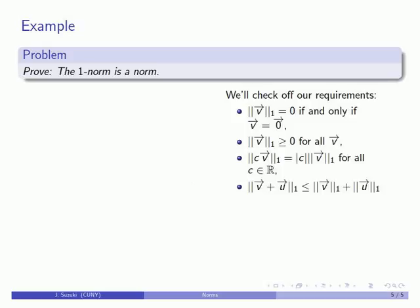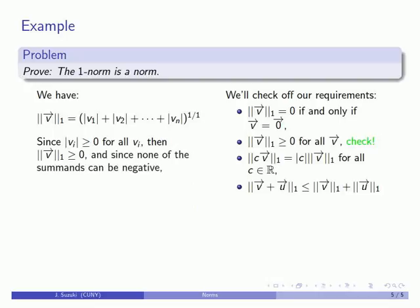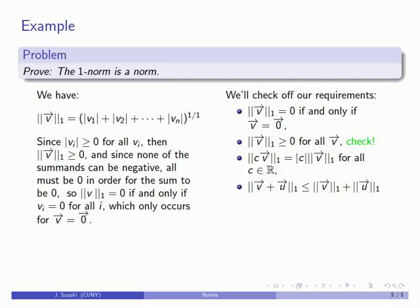First, we set down our definition of the 1-norm and make a few observations. The absolute value of each component vi must be greater than or equal to zero, which means the sum is greater than or equal to zero. So the 1-norm for any vector will be greater than or equal to zero — our second requirement is met. Since none of the terms can be negative, for the sum to be zero all terms must be zero, meaning all components of the vector must be zero. So the 1-norm is zero only for the zero vector — our first requirement is also met.